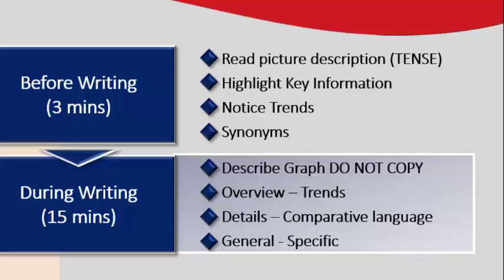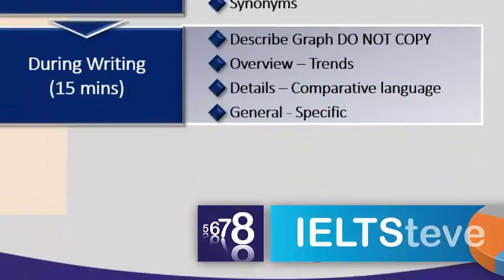You need to have a general statement or an overview of the trends you're noticing. You also need to include all the main details and use good comparison language to compare trends, since the question specifically asks you to compare and contrast information. Generally, while writing, consider going from general to specific — for example, say 'in the line graph the number increased,' then be specific: 'it increased from 10 percent to 40 percent.' So you state the trend and then provide the data.